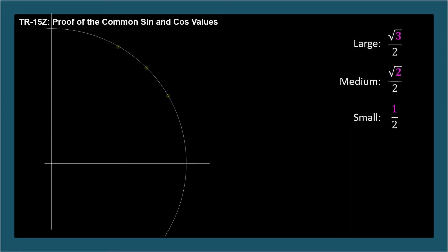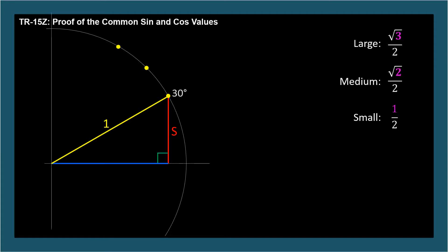We'll start with the small value. Let's draw a SOH-CAH-TOA triangle on a unit circle with a standard position angle of pi over 6, or 30 degrees. The length of the red line represents the sine of 30 degrees. I told you it was 1 half, but let's see. We'll label it s for small right now. We know the hypotenuse is length 1, since it's also the radius of the unit circle. And we don't know the length of blue. For the angles, we know the right angle, and we're given that the central angle is 30 degrees.